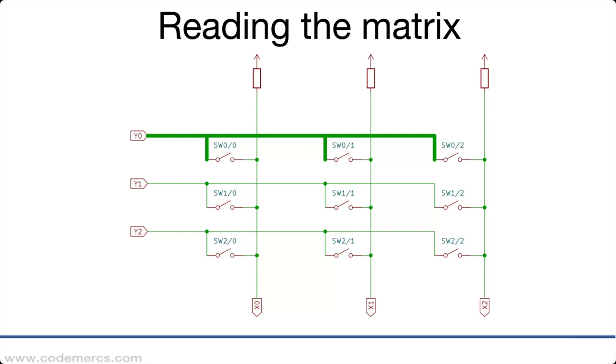So how does reading the matrix work? The y lines are pulled low one by one, and when they're not pulled low they're floating. The x lines are pulled high in the idle state and the keys are on the cross points between the x and y lines. In this example we have no key pressed. The y line is pulled low, all the x lines remain high since there's no connection between y and x lines.